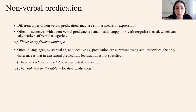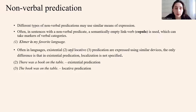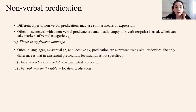Different types of nonverbal predications may use similar means of expression. Often, in sentences with nonverbal predicates, a semantically empty linked verb — which is also called a copula — is used, and this copula can take markers of verbal categories. For example, 'Khmer is my favorite language' — 'is' is actually a copula.